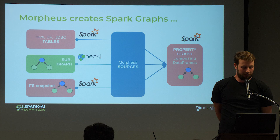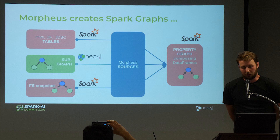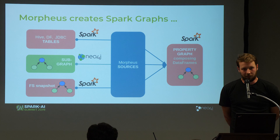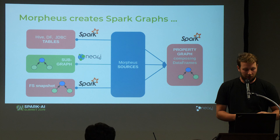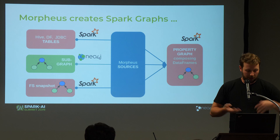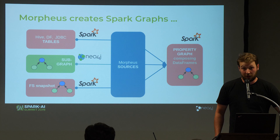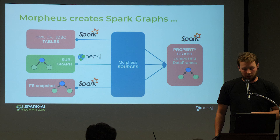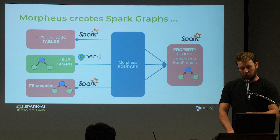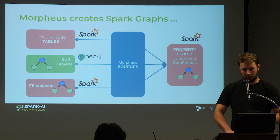In Morpheus, you can see the system in the middle. We can create a graph by composing different tables coming out of Spark. Tables in Spark can come from in-memory tables, file formats, or we could define Hive over JSON files. We can also connect Spark via JDBC to a relational database and get tables out of it to compose graphs. We can also load graphs directly from Neo4j.